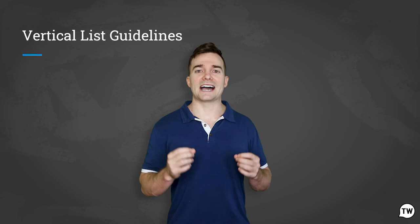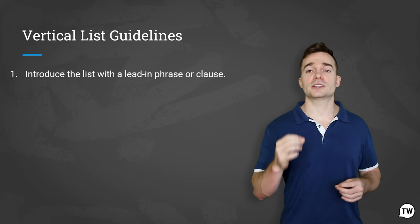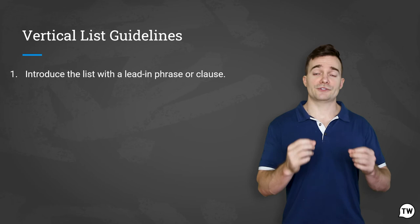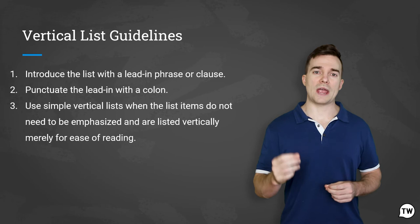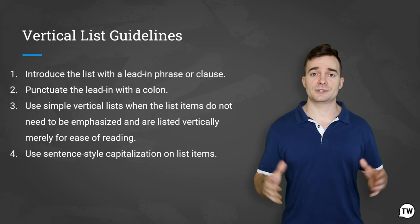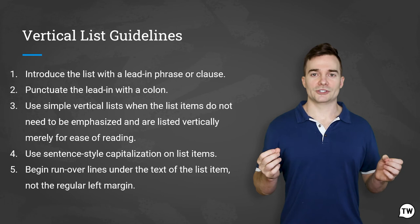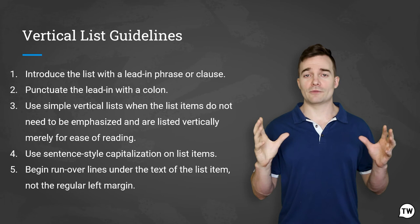On the contrary, here's a good example of how to create a simple vertical list using these guidelines: introduce a list with a lead-in phrase or clause (the lead-in doesn't need to be a complete sentence, and list items can complete the grammar started by the lead-in); punctuate the lead-in with a colon; use simple vertical lists when items don't need to be emphasized and are listed vertically merely for ease of reading; use sentence style capitalization on list items; and begin run-over lines under the text of the list item, not the left margin — this format is called the hanging indent style.